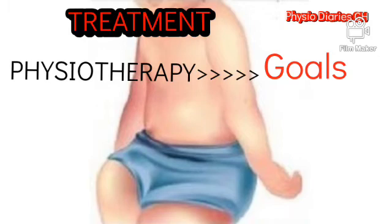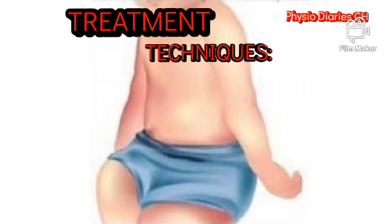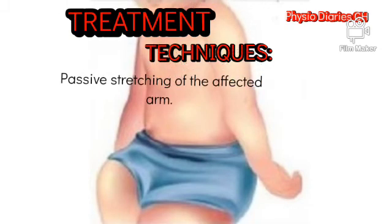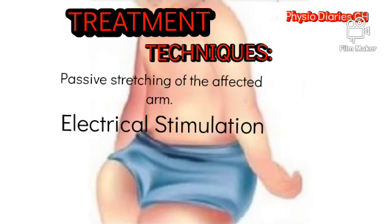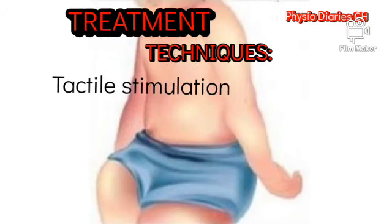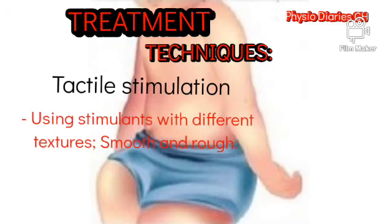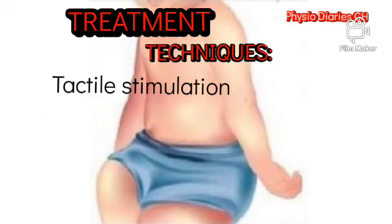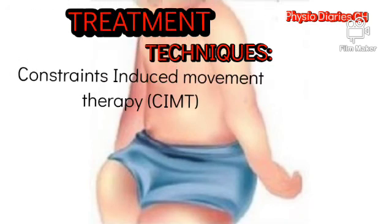Physiotherapy techniques include passive stretching of the affected arm to correct the deformity and improve range of motion. Electrical stimulation is used to revive the weakened nerve, initiate proper conduction, and receive proper impulses from the brain using TENS. TENS also helps reduce pain. Tactile stimulation uses stimulants with different textures — smooth and rough — to improve arm sensation.